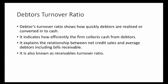As a ratio, it explains the relationship between net credit sales and average debtors including bills receivable. It explains the figures of debtors and that relationship. Debtors turnover ratio involves net credit sales, average debtors, and average bills receivable as the connection — that relationship is the ratio.